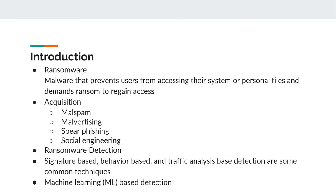An example of spear phishing would be sending emails to employees of a certain company. Social engineering: threat actors may use social engineering to trick people into opening attachments or clicking on links by appearing as a legitimate user. There are different techniques available for ransomware detection, like signature-based, behavior-based, and detection on the basis of traffic analysis. Recently, one of the best methods for ransomware detection is machine learning-based detection.